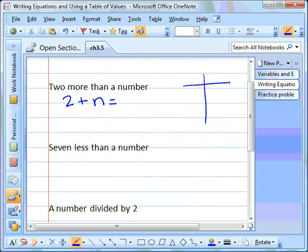If we make a t-chart to represent this and we substitute in some values for our variable n, we'll solve using that. If we substitute in zero for n, that would equal two. If we substituted one for n, that would equal three. And if we substituted two for the variable n, that would equal four.